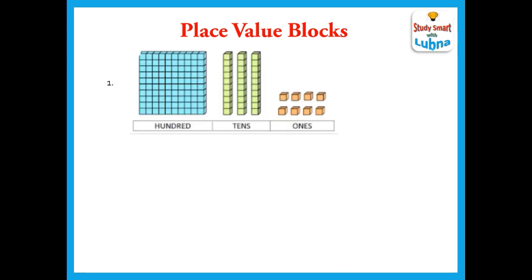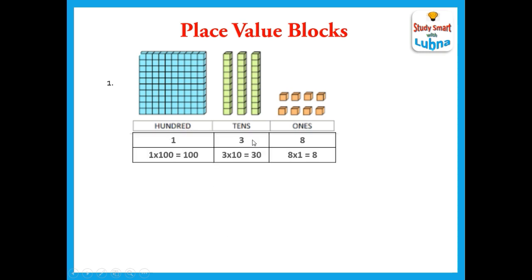Example number one. Here you can see examples of ones, tens, and hundreds. We are going to discuss a three digit number first. You can see eight ones, three tens, and one hundred. Simply: eight multiplied by one equals eight, three multiplied by ten equals 30, and one multiplied by 100 equals 100. So the place value of ones is eight, tens is 30, and hundreds is 100. The three digit number is 138.